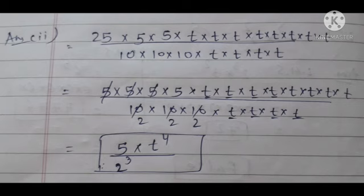25 means 5 ka power 2, 5 times 5 is 25. Okay, then after t ke similar in denominator and numerator, they will be removed. And 5 times 2 is 10, 5 times 2 is 10, that is 3 times. So what is left in the answer: 5 multiply t raised to 4, and in denominator 2, that is 3 times, so 2 raised to 3, that means 2 raised to 2 ka cube.